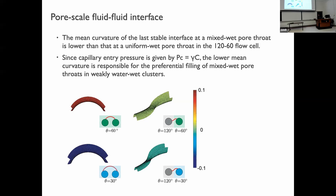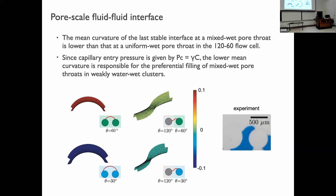However, when we change the contact angle to 30° for the water-wet posts, the mixed-wet pore throat at 120°/30° has a curvature near zero while the fully water-wet pore throat shows a mean curvature of around -0.1. In that case, it is more favorable for water to invade the fully water-wet pores compared to the mixed-wet pores — which explains the difference we observe in the experiments. Ashkan also confirmed under microscope that these S-shaped menisci appear at the mixed-wet pores in the experiments, which is very reassuring.